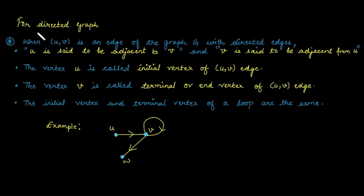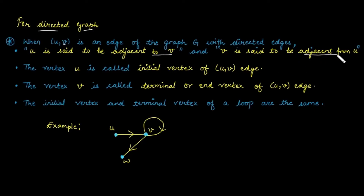Next are the terminologies related to the directed graph. In a directed graph, if there is an edge from u to v, written as the ordered pair (u, v), it means the edge starts from vertex u and ends at vertex v. In that case, u is adjacent to vertex v, and v is adjacent from vertex u.